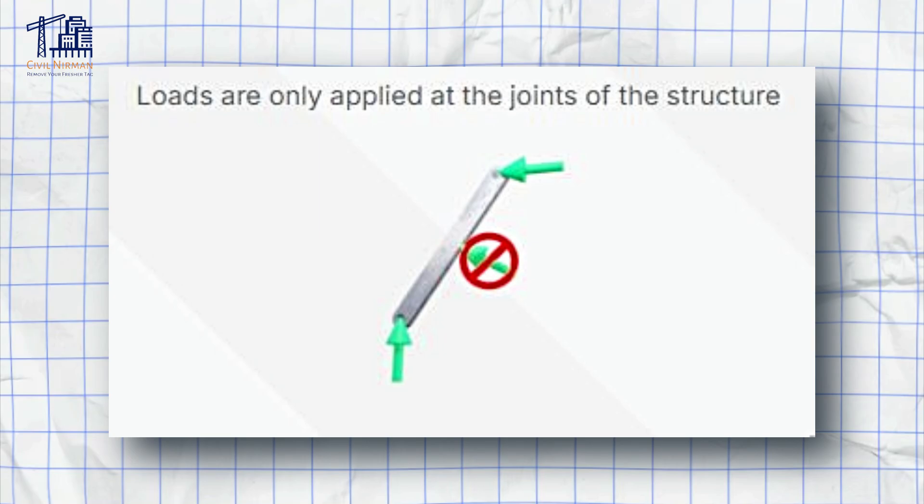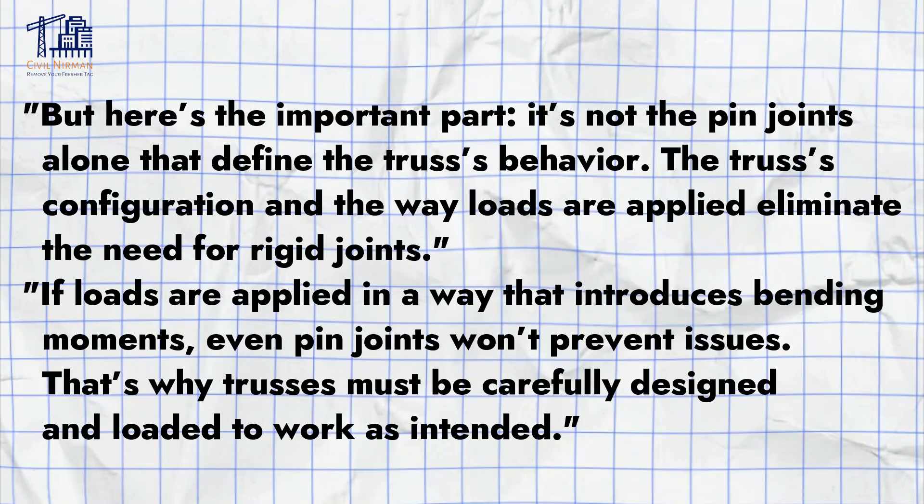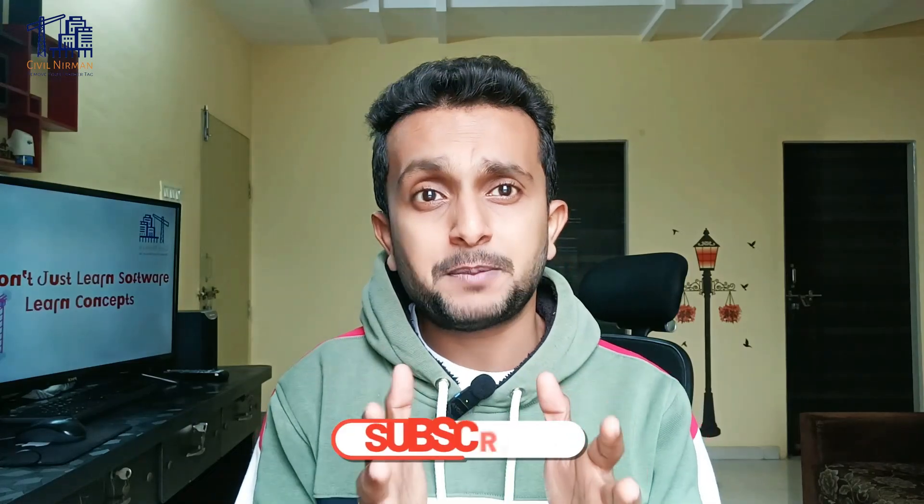If loads are applied in a way that introduces bending moments, even pin joints wouldn't prevent issues. That's why trusses must be carefully designed and loaded to work as intended. So next time you see a truss, remember it's the configuration and the forces that make it work, with the pin joints as the perfect support for the system.